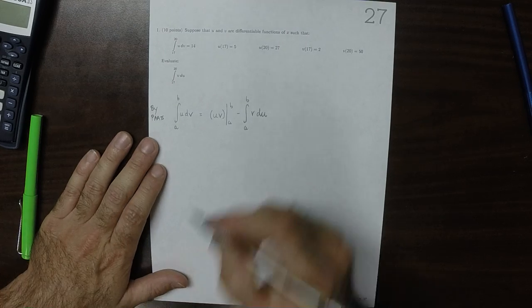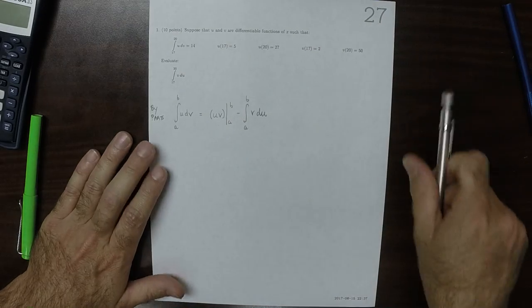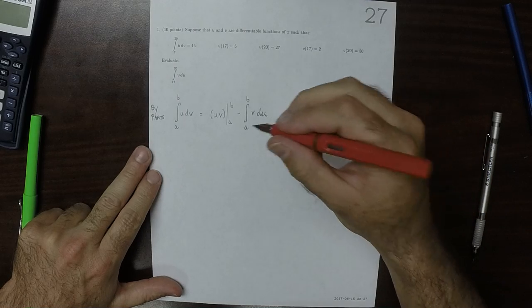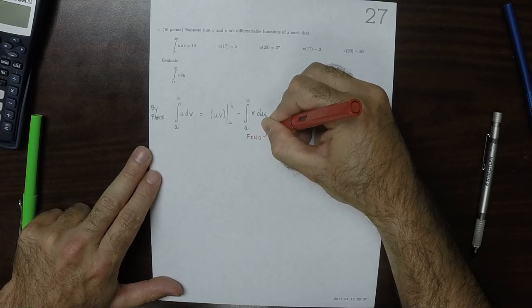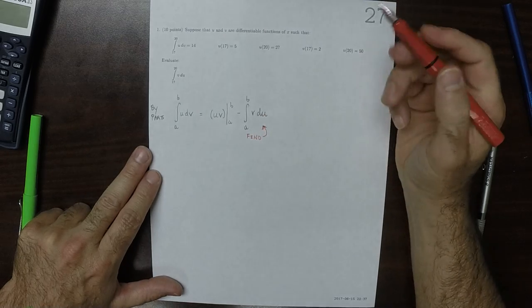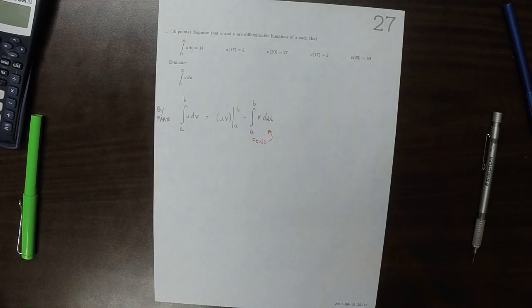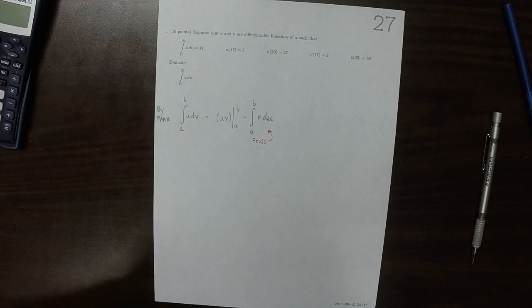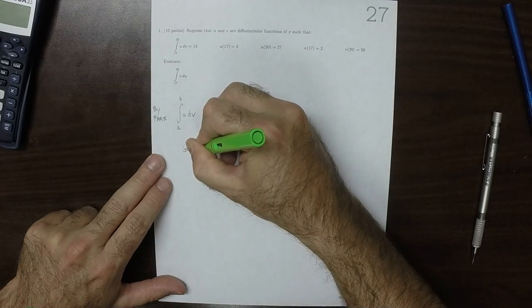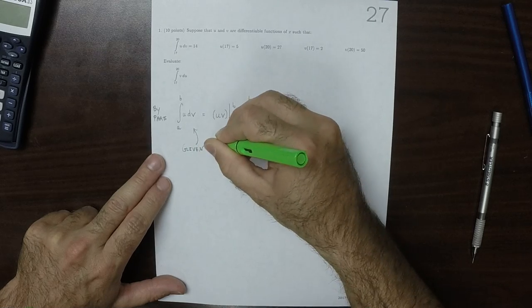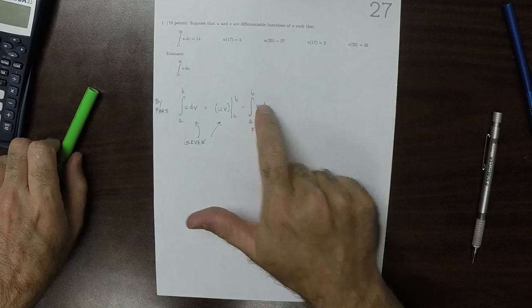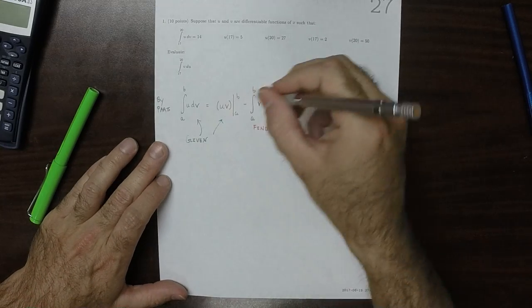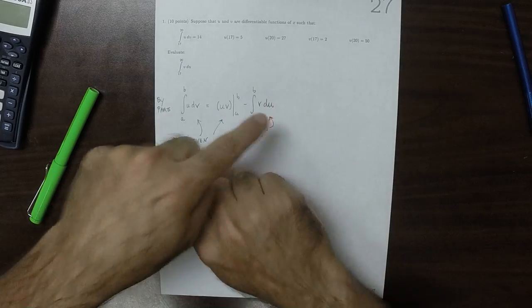What we're asked to do is find this one. All of that information at the top says that we are given all of this. So if we solve for that one, we'll switch these two, move them side to side.